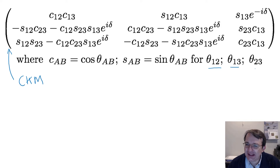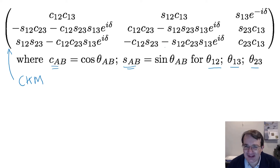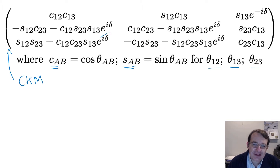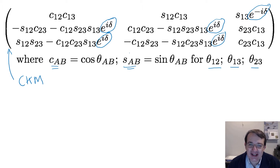These are the three angles: θ₁₂, θ₁₃, and θ₂₃. You end up with this rather complex-looking expression using shorthand, because otherwise it would be even bigger written out with all the sines and cosines. You do not need to remember this. The important part to take away is the complex phase — e to the iδ — because it's this complex phase that gives us CP violation in the standard model. If there was no complex phase, there would be no CP violation.